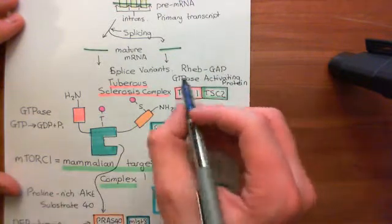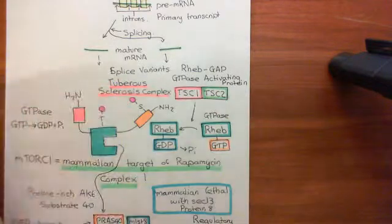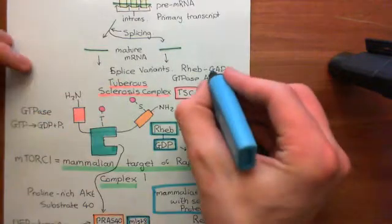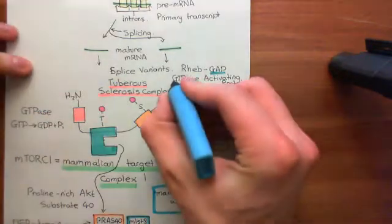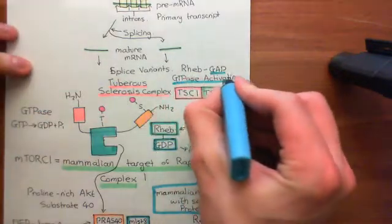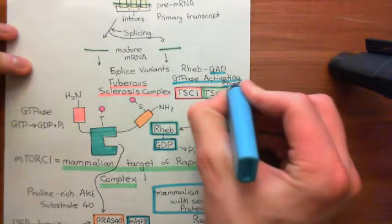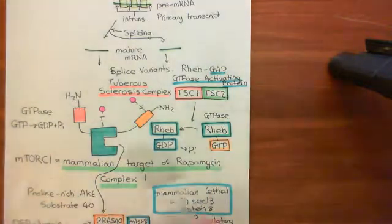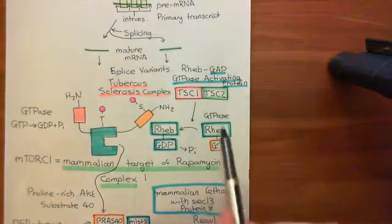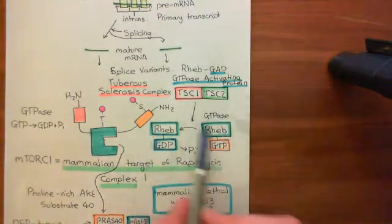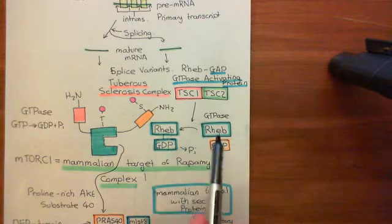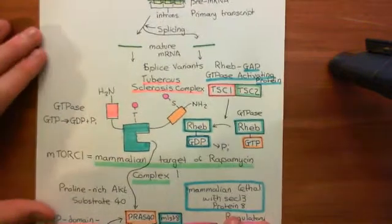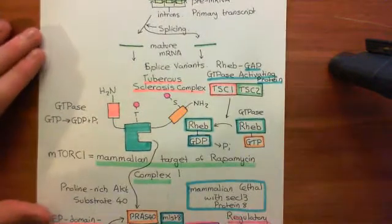So GAP is short for GTPase Activating Protein. Therefore, the tuberous sclerosis complex is involved in turning these RHEB monomeric G proteins off.